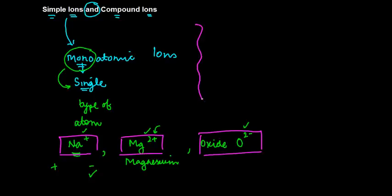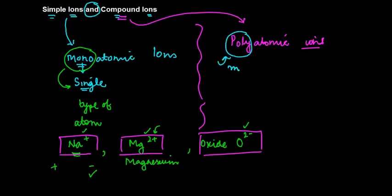As against this, the compound ions—compound means what? These are also known as polyatomic ions. Again, just like the word mono over here, poly indicates that there are multiple atomic ions. So they basically have multiple types of atoms in this particular ion.